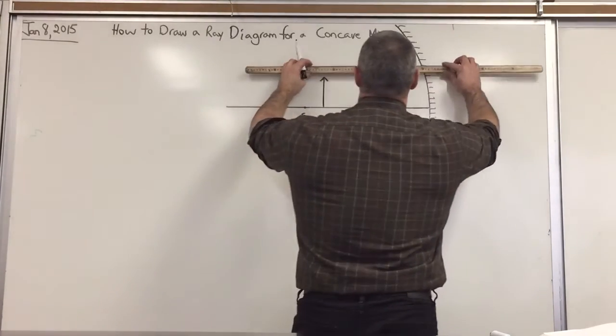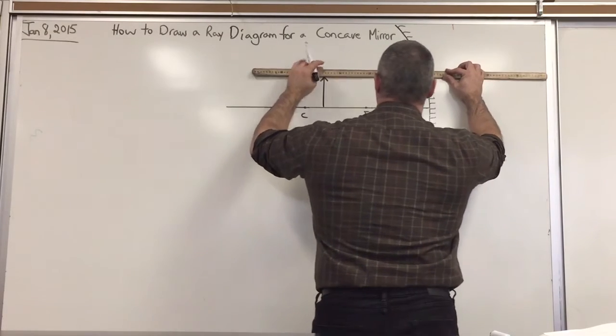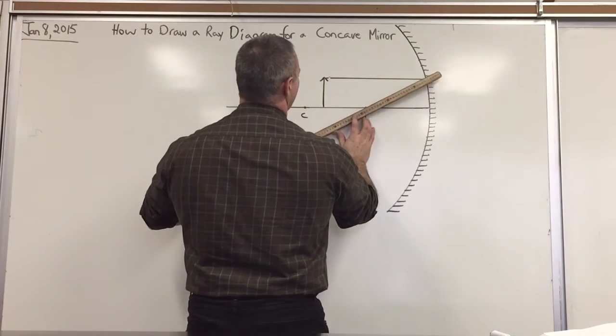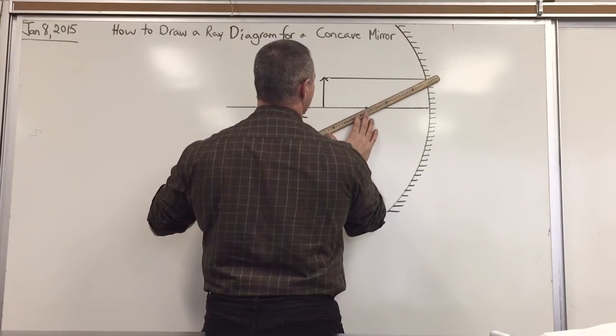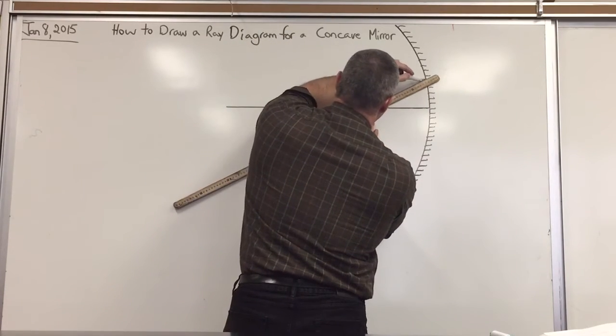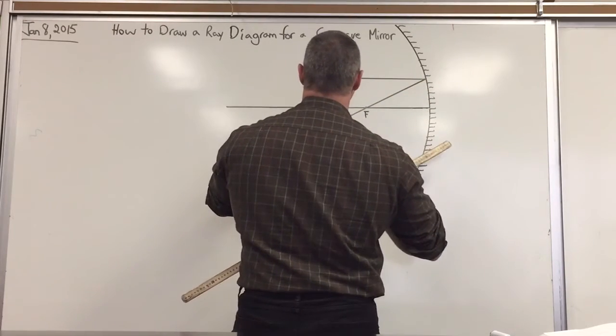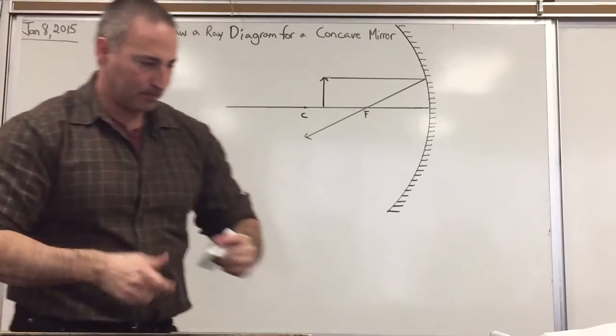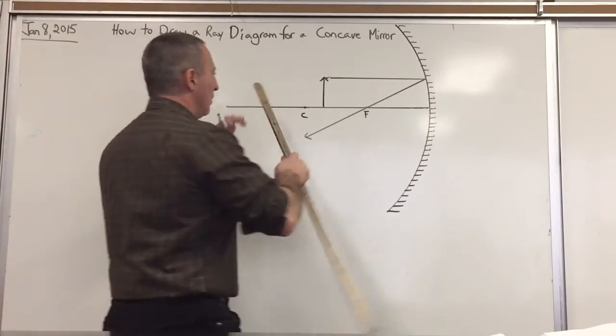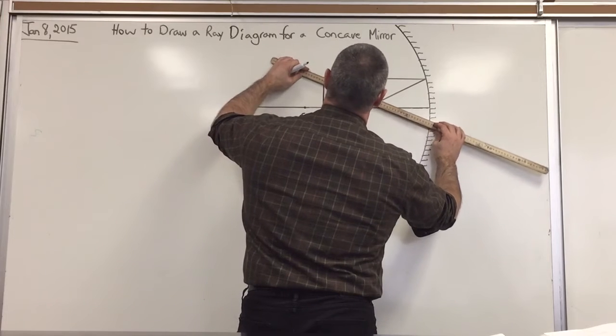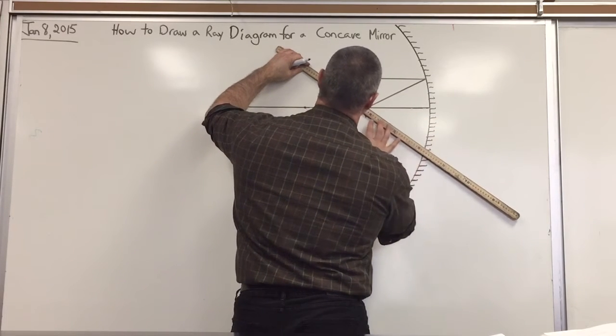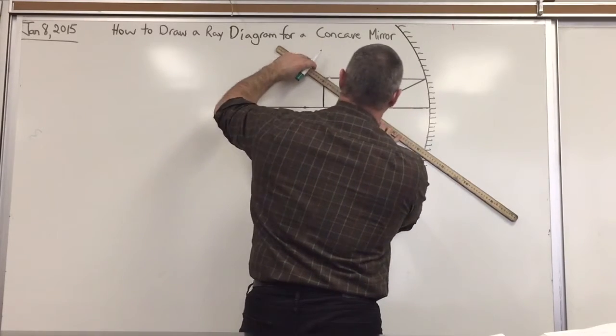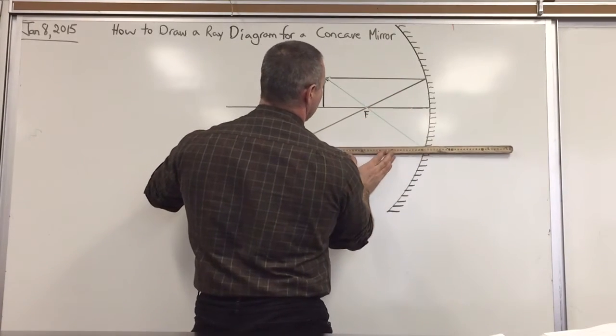So let's draw the first ray going to the mirror. When it reflects back, it goes through the focus. The second ray, I'm going to choose a different color. It goes through the mirror and then reflects back parallel to the principal axis.